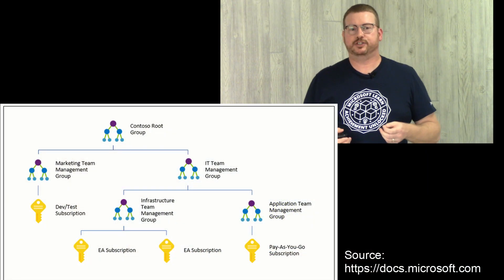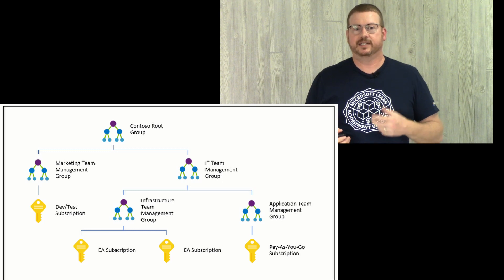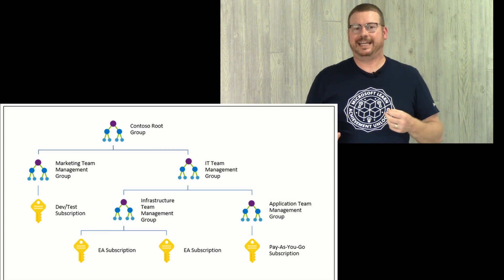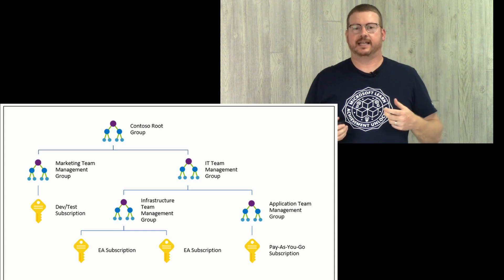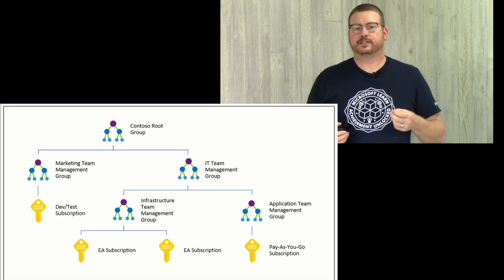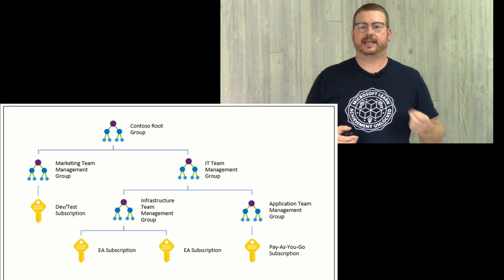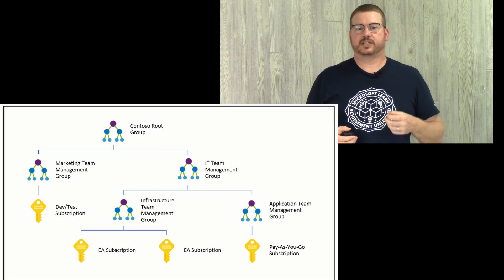Management groups solve this issue by allowing you to create a management group tree up to six layers deep to hold subscriptions. Each group or subscription will inherit settings from the management group above, unless that inheritance is blocked. A single directory can contain up to 10,000 management groups. This gives flexibility in how subscriptions are managed and settings are applied.